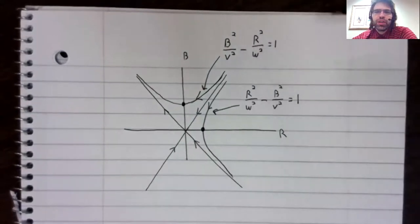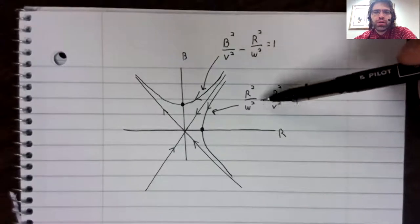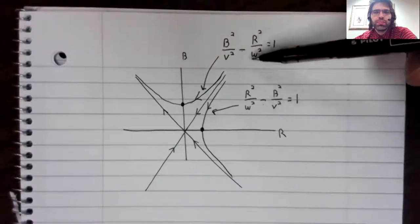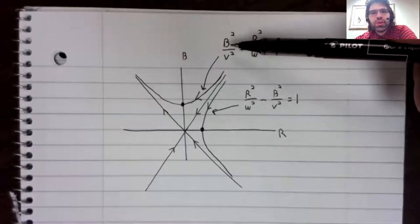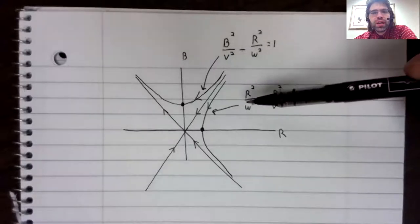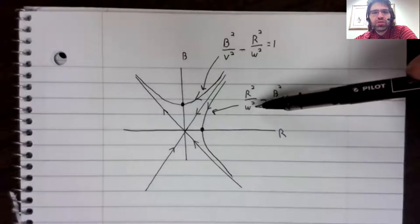And a hyperbola in standard form can take on one of two forms. There's subtraction. And either the B squared term could be first, or the R squared term could be first.